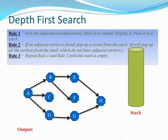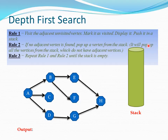We are going to see all three major rules for the depth-first search algorithm and visualize them through animation. Rule one: visit the adjacent unvisited vertex, mark it as visited, display it, and push it into a stack. Rule two: if no adjacent vertex is found, pop a vertex from the stack — it will pop all vertices that do not have adjacent vertices.